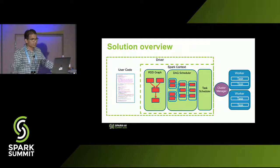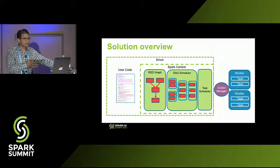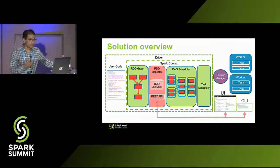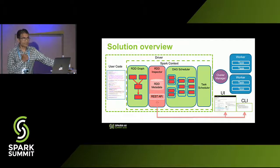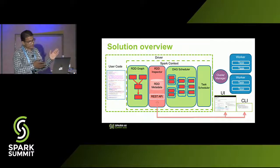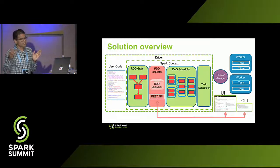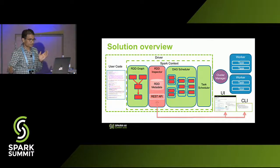Here's how it works. The user code goes to the driver, which creates an RDD dependency graph, then a DAG of stages, and those stages have tasks executed by workers — nothing new there. We insert our code, which has two components: we observe the RDDs as your application progresses from start to finish, collecting all RDD metadata so we understand the basic structure of each RDD. We provide a REST API — once your application has finished running, we hold it there and provide a REST API available through a UI or CLI.